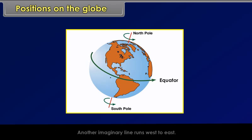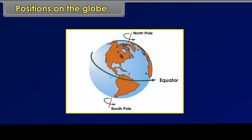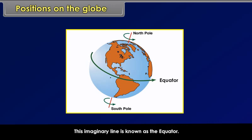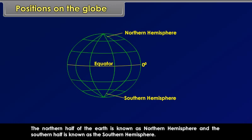Another imaginary line runs west to east and divides the earth into two equal parts. This imaginary line is known as the equator. The northern half of the earth is known as the northern hemisphere and the southern half is known as the southern hemisphere.